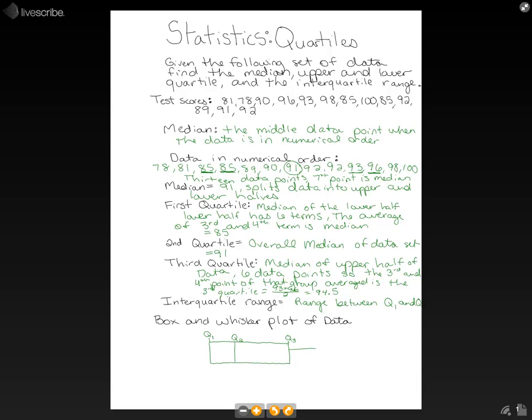Now, we have our whiskers. So, we have two lines coming out of the top and the bottom. We're going to have our lowest value here, and our highest data point here.